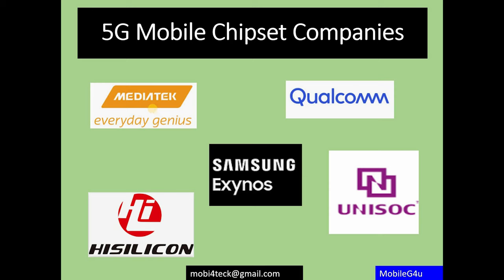There are five main chipset companies you have to target: MediaTek, Qualcomm, Samsung, Unisoc, and HiSilicon — HiSilicon being a product of Huawei. You should be updated with these five companies at all times, whether on LinkedIn or any social media platform. Follow them to know what new chipsets are coming, what features they have, and how they differ from LTE.